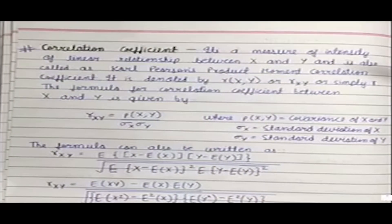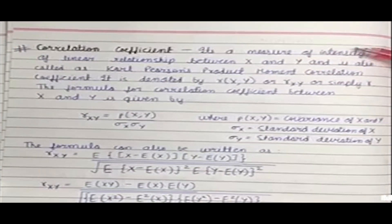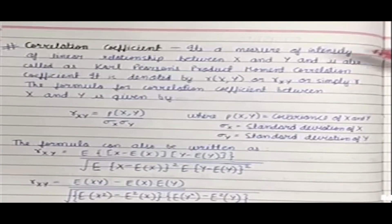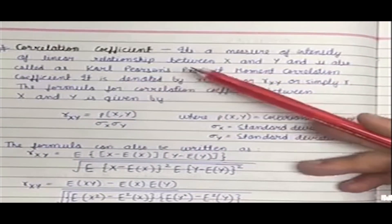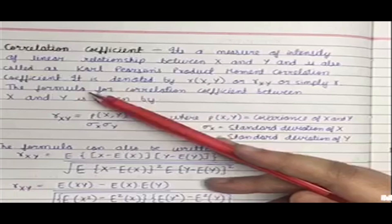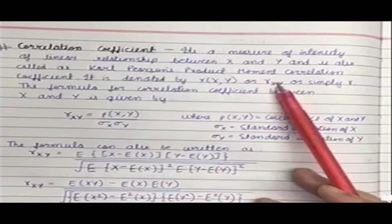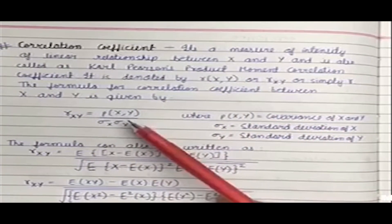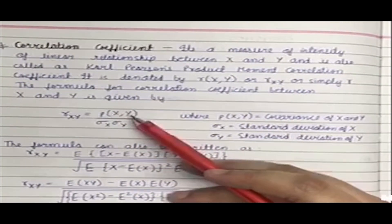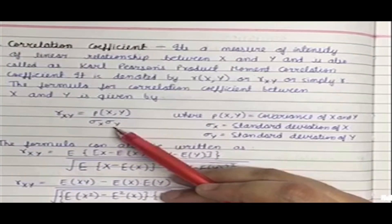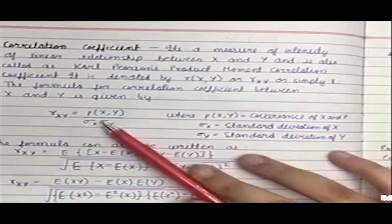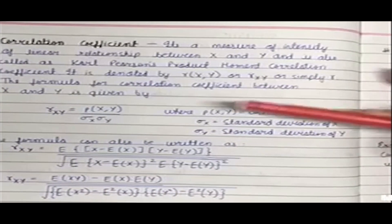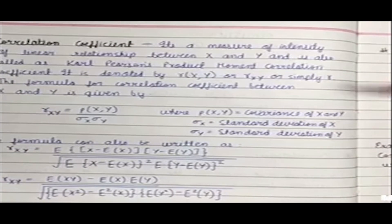Now the topic is correlation coefficient. It's a measure of intensity of linear relationship between x and y, where x and y are the two random variables. It is also known as Karl Pearson's product moment correlation coefficient, denoted by r(x,y), r_xy, or simply r. The formula is r_xy equals ρ(x,y) divided by σ_x · σ_y, where ρ(x,y) is the covariance of x and y, and σ_x and σ_y are the standard deviations of x and y respectively.